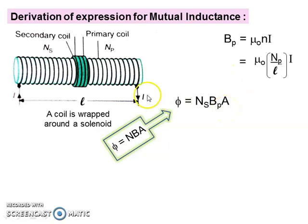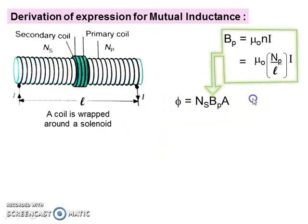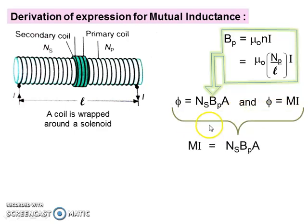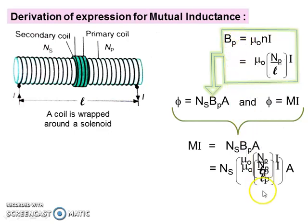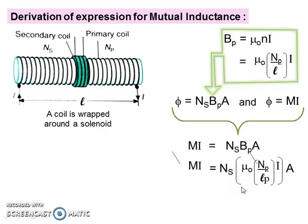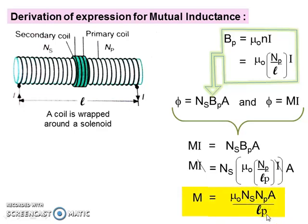From the previous formula ψ = Mi, we combine both equations and equate: Mi = Ns·Bp·A. Substituting the magnetic field from the solenoid Bp into the equation and cancelling i, the formula for M becomes M = μ₀·Ns·Np·A / Lp, where Lp is the length of the solenoid. This is the derived expression for mutual inductance in the solenoid-coil case.